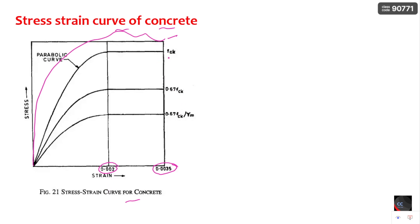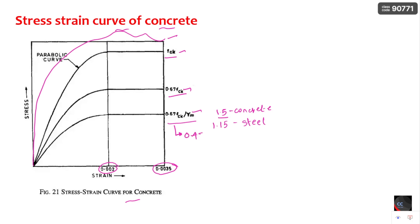Here you can see FCK, which is the characteristic strength of concrete. 0.67 FCK is the compressive strength of concrete. If you divide 0.67 FCK by the partial safety factor gamma M — which is 1.5 for concrete in the limit state method — you get 0.45 FCK, which is the design strength of concrete.